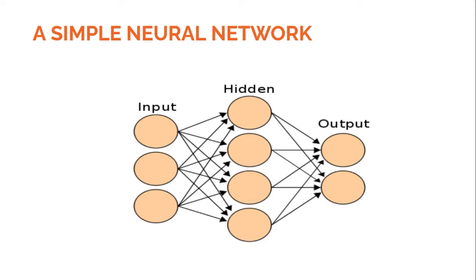Hello and welcome. In this tutorial we will go further ahead in our neural networks in-depth playlist. Today we will be implementing a fully connected neural network with one hidden layer. We will have three inputs and four hidden neurons, with four outputs for each particular neuron.